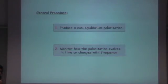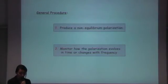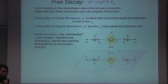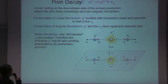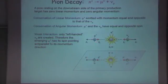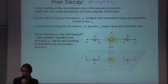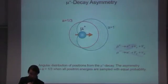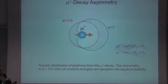The general procedure in all NMR is: first produce a non-equilibrium polarization, then monitor how this polarization evolves in time or changes with frequency, and from that extract information on the local magnetic fields or other properties of matter. What makes µSR possible is that when a pion decays, because of the weak interaction, the emerging muon has its spin pointing anti-parallel to its momentum direction. So when we bring the muon down the beam line to the sample, we know the momentum direction. The other key feature is the asymmetry of the muon decay — you detect positrons emitted with an asymmetry from the muon decay.